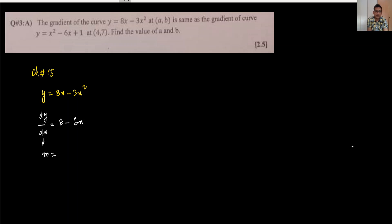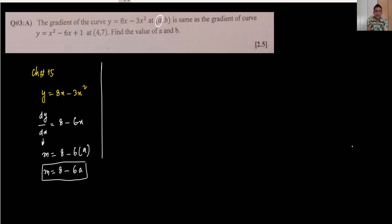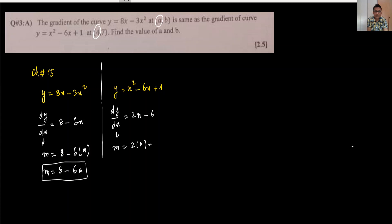The gradient at x = a is 8 - 6a. For the second curve y = x² - 6x + 1, differentiating gives dy/dx = 2x - 6. Substituting x = 4: m = 2(4) - 6 = 8 - 6 = 2. So the gradient of the second curve at x = 4 is 2.